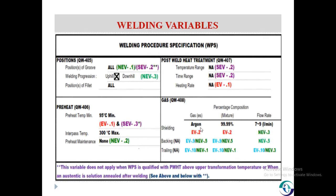Next is position. The addition of a position is a non-essential variable when there is no impact test. When there is an impact test, supplementary essential variable QW405.2 is applicable — a change in position to vertical upward is a supplementary essential variable. Welding progression is a non-essential variable, meaning a change from uphill to downhill or downhill to uphill is non-essential.